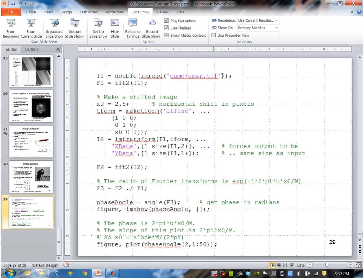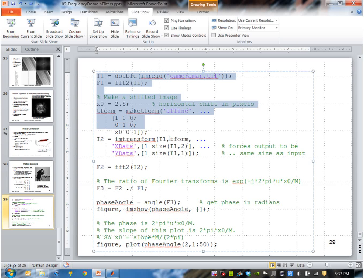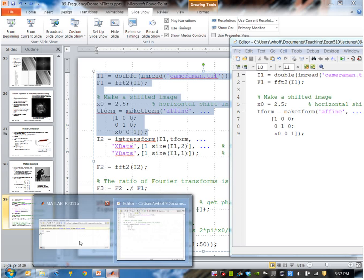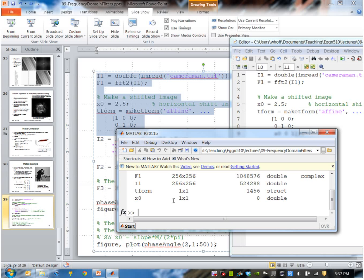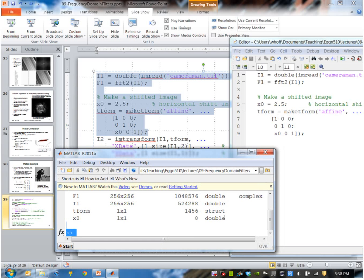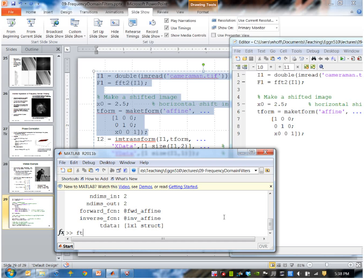This is what the program will look like. Let me go ahead and run that. I've read in the cameraman image, should be called I1. I've created this Fourier transform called F1. I've created a transform. You can see T form here is a structure in MATLAB that contains the affine transformation. This is what it looks like. I've defined a horizontal shift of 2.5 pixels and zero in the Y.